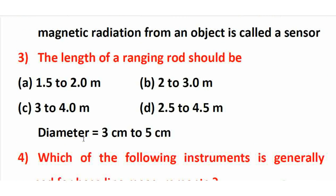Next question: The length of the ranging rod should be? The right answer is option B — 2 to 3 meters. The length of a ranging rod varies from 2 to 3 meters, and the diameter is 3 centimeters to 5 centimeters. The ranging rod has color bands — alternating red and white, or black and white bands.